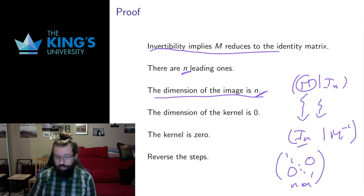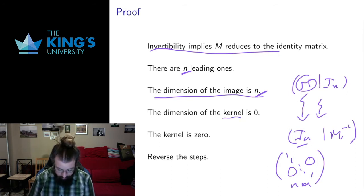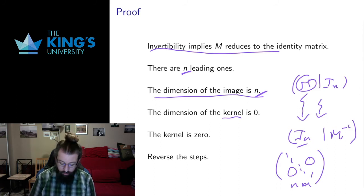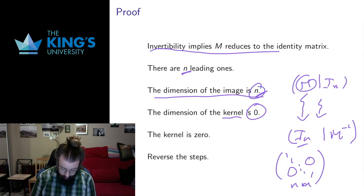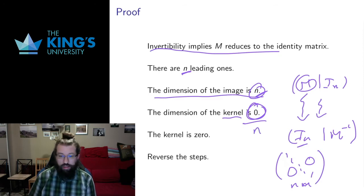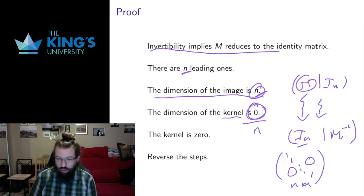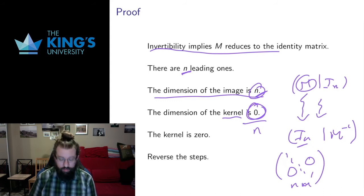We just proved in the previous proposition that the dimension of the image plus the dimension of the kernel equals the dimension of the domain, and the domain here is Rn. So the kernel must have dimension zero, because this number and this number have to add up to n, and the only thing you can add to n to get n is zero. So the kernel is dimension zero — and a dimension-zero space is just a point. The kernel has to include the zero vector, so this means the kernel has to be exactly zero.